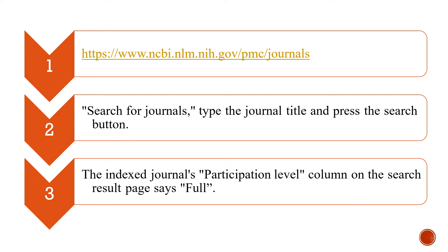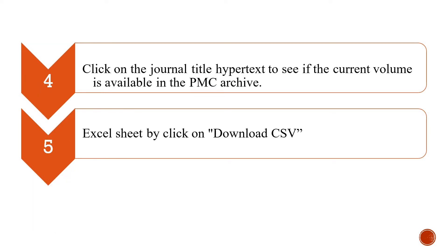It will appear over there. Then the next step is to click on the journal title hyperlink to see if the current volume is available in the PMC archive or not. And after that, if we want, we can even download in the form of an Excel sheet by clicking on the Download CSV option.